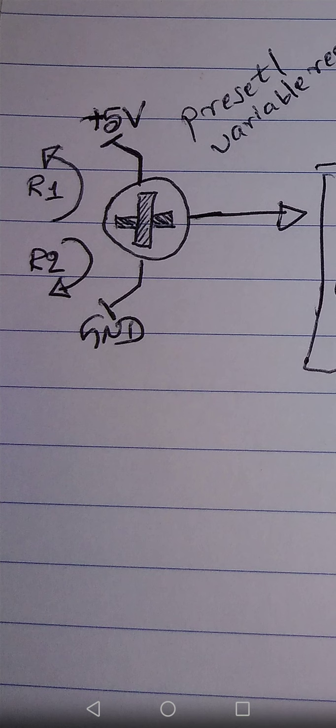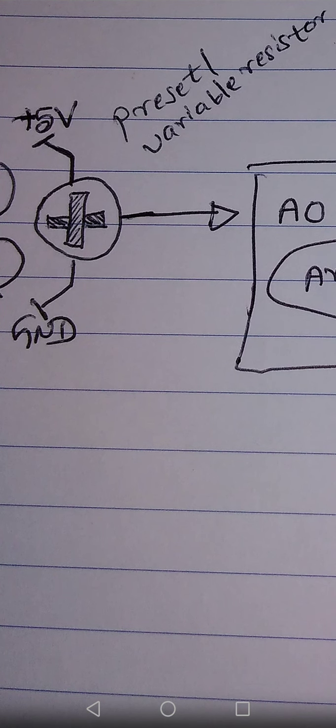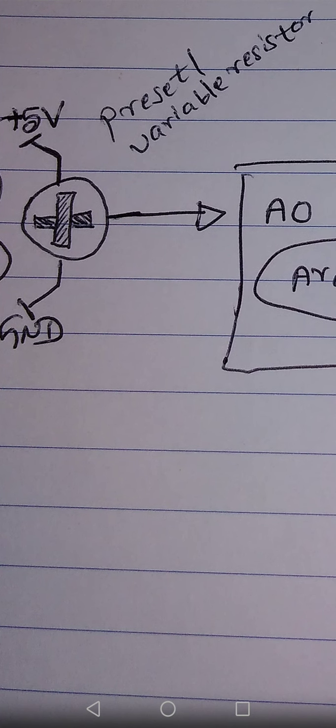The two side pins should go to +5V and GND of the Arduino, so the variable resistor is supplied with five volts. You can swap the terminals — giving five volts to one side and ground to the other is fine either way. The middle pin goes to the Arduino's A0, as shown by the arrow. The middle pin is the actual input pin to the Arduino, or we can say it is the output pin of the variable resistor.